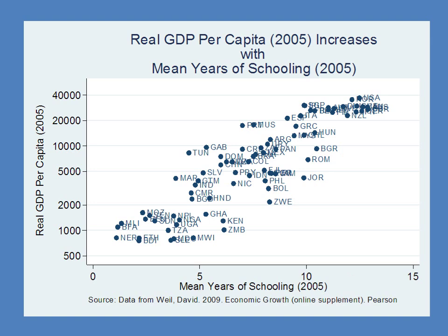Our second bit of data looks at real GDP per capita against average years of schooling, and again we see a pretty tight relationship: more years of schooling, more human capital, greater GDP per capita. Of course, the causality could be going the other way — perhaps it's just that in rich countries people have a lot of schooling because they can afford it. Nevertheless, the basic facts are consistent with the Solow model.